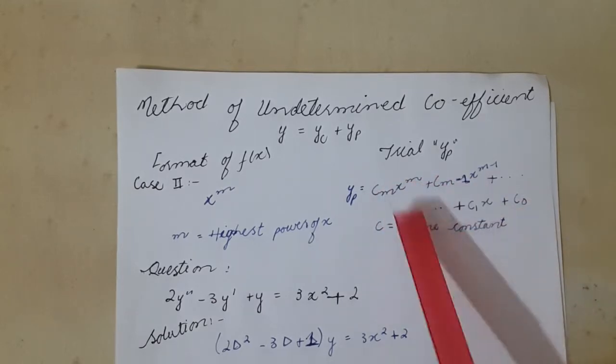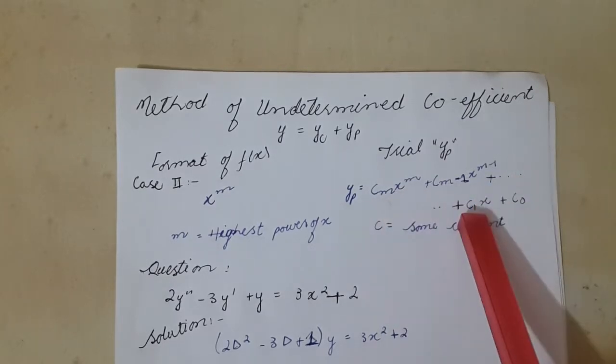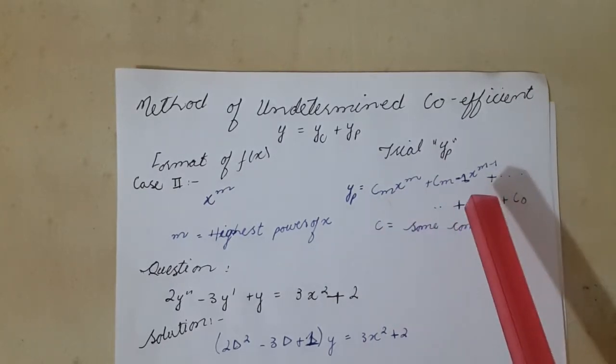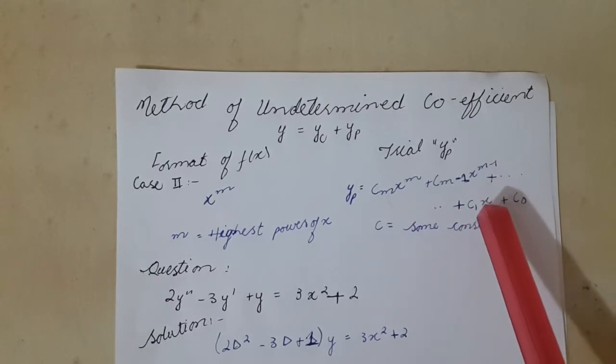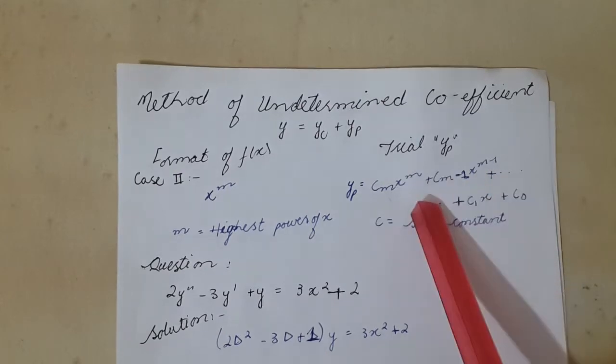c equals some constants. We will find the values of these constants and we will put the values of these constants in this equation and we will get our yp.